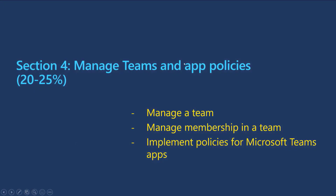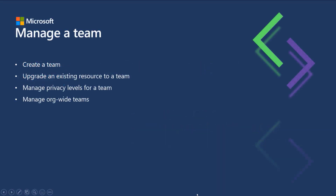Onward to section four. In section four, we're going to be covering managing teams and app policies. This makes up 20 to 25% of the exam overall, and we've got three sections: manage a team, manage membership in a team, and how to implement policies for Microsoft Teams apps. In the manage a team section of your exam, they're going to be expecting you to understand how to create a team, how to upgrade an existing resource to a team, how to manage privacy levels for a team, and how to manage org-wide teams.